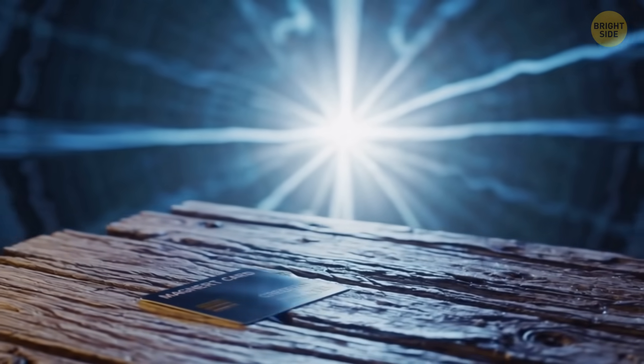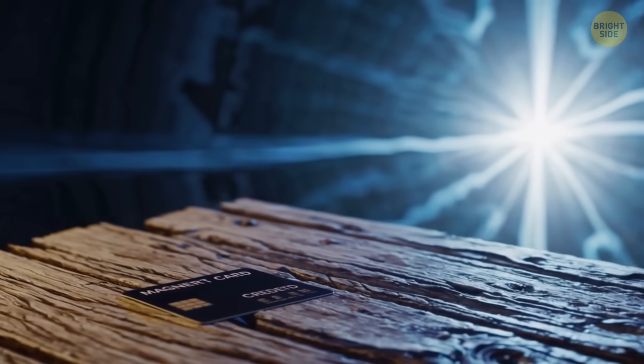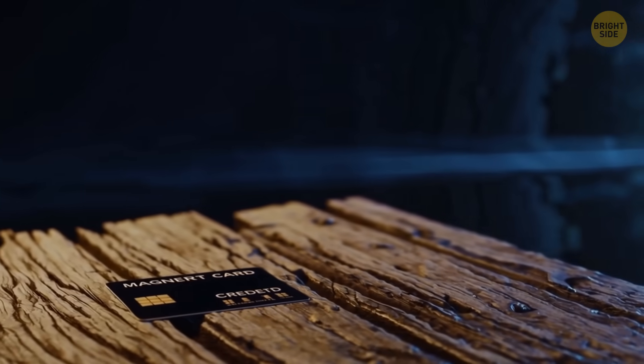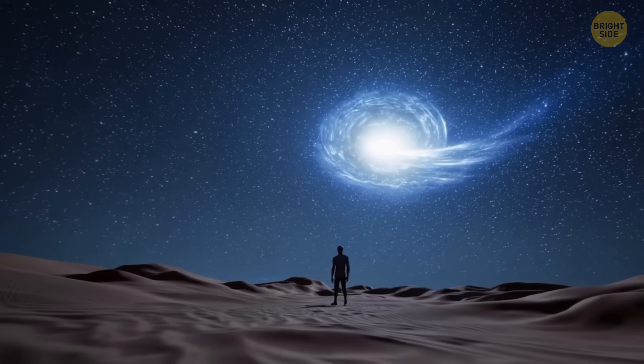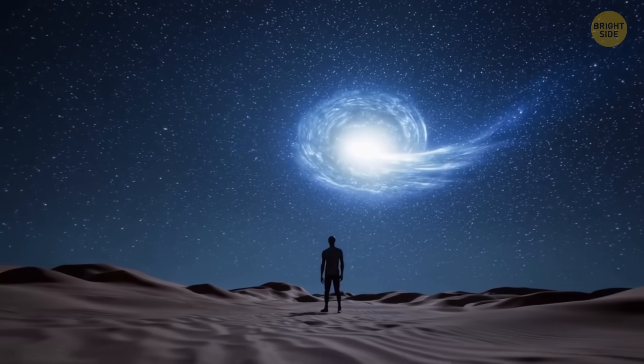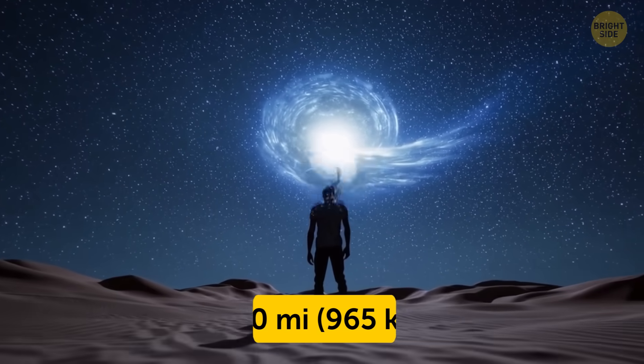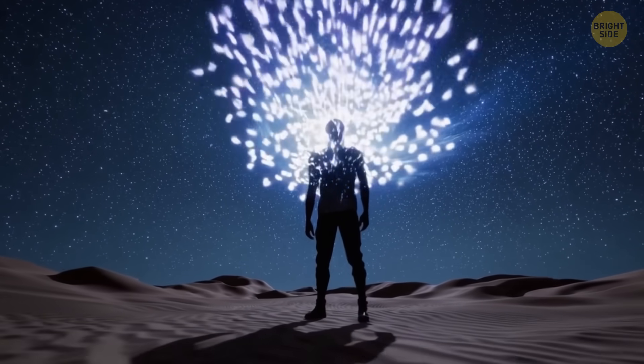That's so strong that if the magnetar came close to Earth, it could wipe out every credit card on the planet just from its magnetism, and we couldn't shop anymore. Plus, if a person got too close to a magnetar, like 600 miles or so, it could pull their very atoms apart. And they couldn't shop anymore.